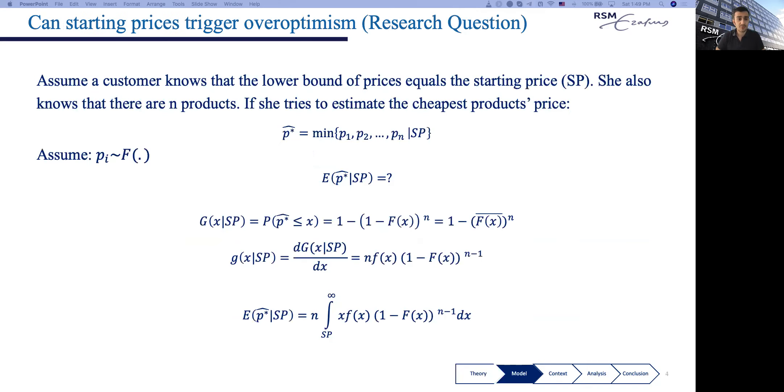But our research question is the following: Can starting prices trigger overoptimism? We assume that the customer knows that the lower bound of the prices equals the starting price. She proceeds with this information and then finds out there are N available products. She perceives the distribution of prices in the range with the CDF of F. And we try to estimate what she perceives as the lowest possible valuation for this product, the lowest price.